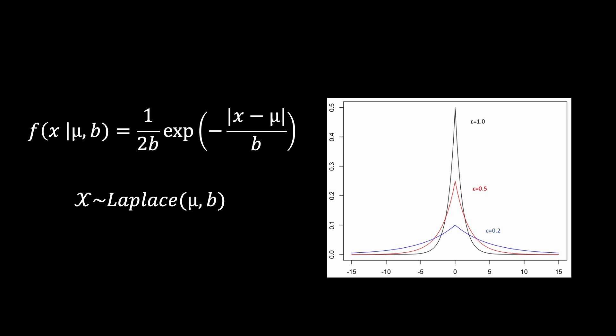For differential privacy, the mean is always zero and b, the second parameter, is the sensitivity of the query divided by the privacy parameter epsilon.